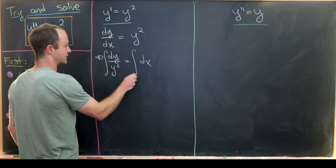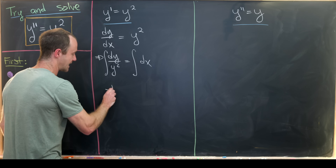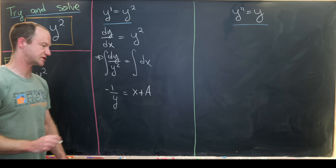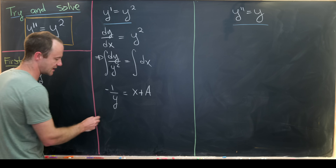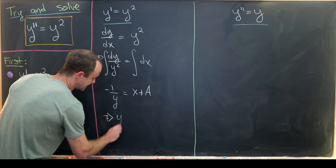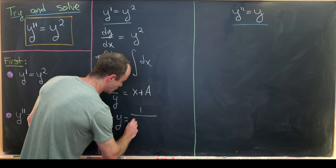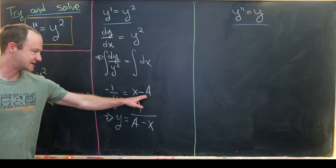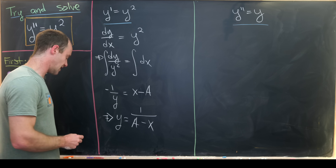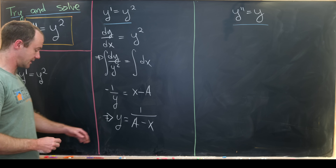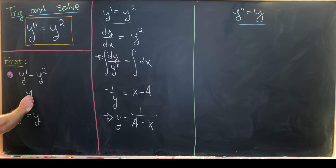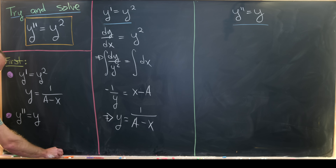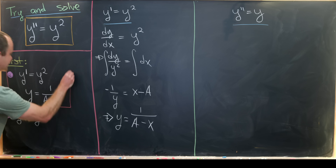Now we're going to anti-differentiate both sides. That gives us minus one over y equals x plus some constant a. We can solve for y pretty easily, giving us y equals one over a minus x. There's a more careful way to do this, but this would generally be covered in a differential equations class. So we've solved the first one and our solution is one over a minus x.